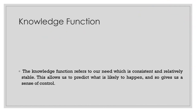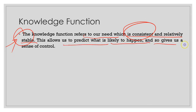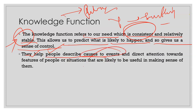Let's talk about the fourth function: the knowledge function. The knowledge function refers to our need for information that is consistent and relatively stable. When we start our education we learn many things — from the environment and from our experiences — and we hold different knowledge for different things. We always try to accept those things which are consistent and stable with our knowledge. This allows us to predict what is likely to happen and gives us a sense of control.